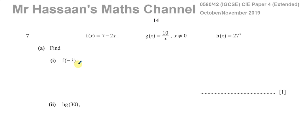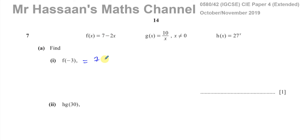Question number seven, part A, says find f(-3). We're given three functions: f(x) = 7 - 2x, g(x) = 10 over x where x can't be zero, and h(x) = 27 to the power of x. To find f(-3), you replace the x with negative three. So seven minus two times negative three is seven plus six, which is 13.